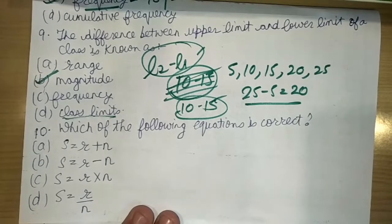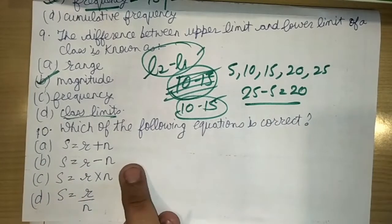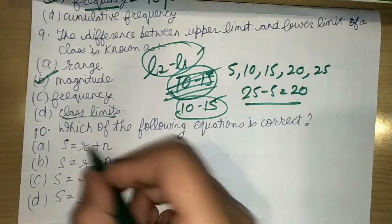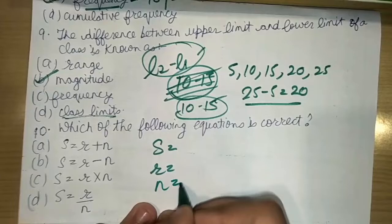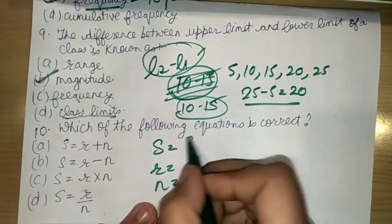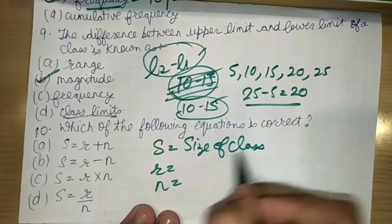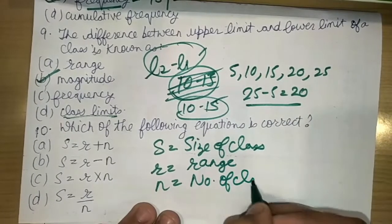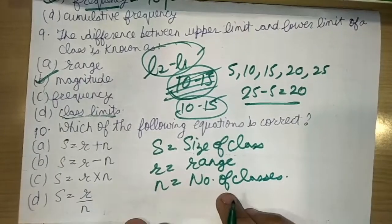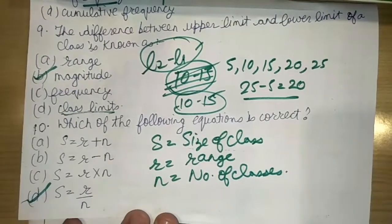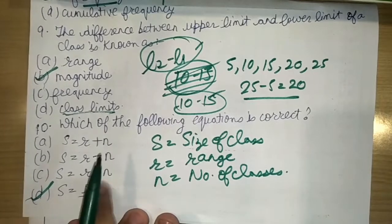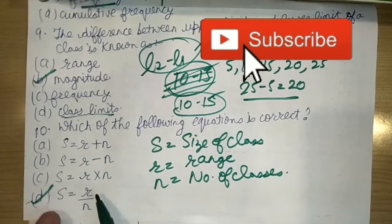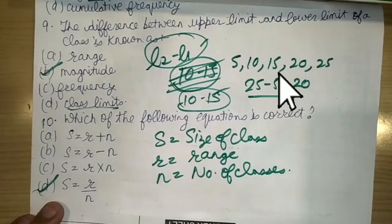The last question is: which of the following equations is correct? This is very important for exam purposes. Here, S means size of class, R means range, and N means number of classes. The correct relation is: Size equals Range divided by Number of classes, i.e., S = R/N. So option D is correct. This formula you must learn.